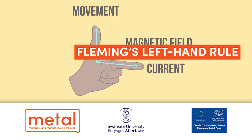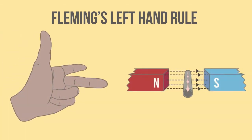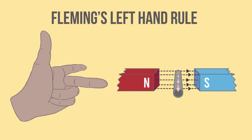Fleming's left-hand rule can be used to predetermine the direction of the force exerted on a current-carrying conductor when placed within a magnetic field.